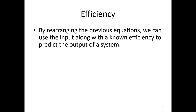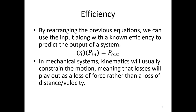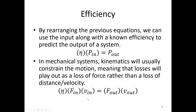By rearranging those equations, we can use the input along with the known efficiency to predict the output of a system — for example, efficiency times power in gives expected power out. In mechanical systems, kinematics will usually constrain the motion, meaning losses play out as a loss of force or torque rather than a loss of distance or velocity. For our transmission, speed is locked in by kinematics, so the torque is what we lose. In a translational system, efficiency times force in times velocity in equals force out times velocity out. Something like a hydraulic system is translational — the velocity correspondence is determined by kinematics, but the force may be lower than expected if efficiency is below 100%.